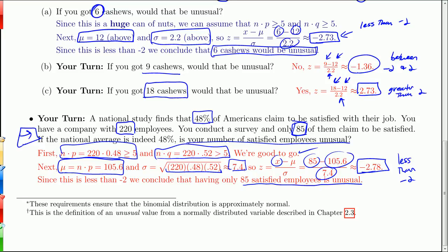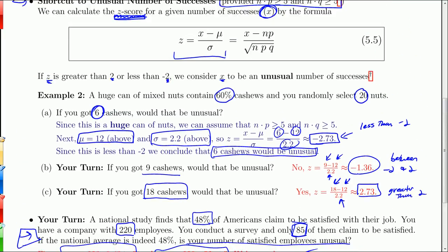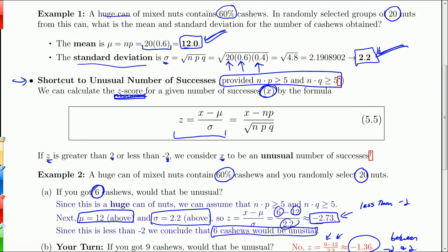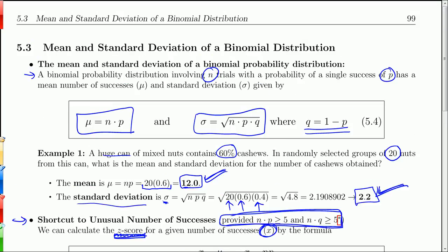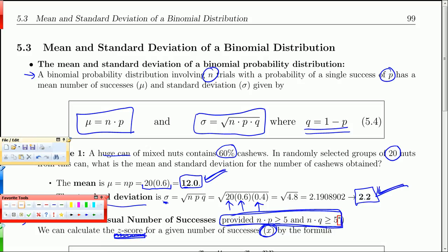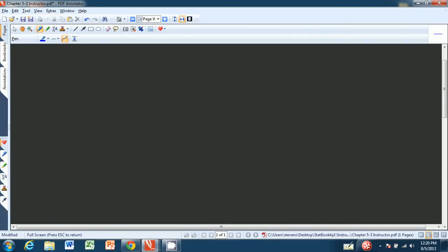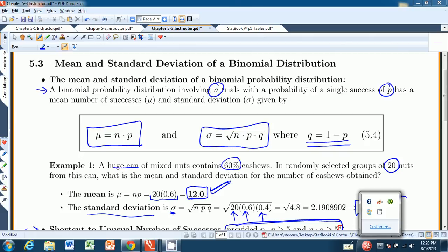So that's how you define things as usual and unusual without all the adding up of the probabilities. But again, in order to use this sort of z-score method, this sort of cheat method, we do need to have n times p and n times q both bigger than 5. And I believe that wraps up chapter 5 for us. We'll go and do the summary worksheet, and that'll be it. So I will see you on the chapter 5 summary worksheet if you are so inclined to go there.